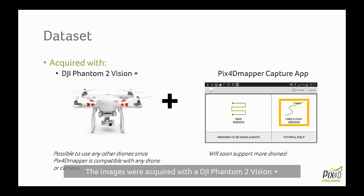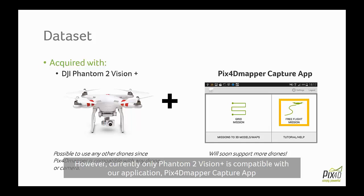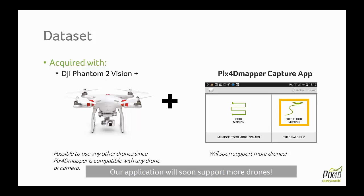Regarding the dataset, in this example the images were acquired with the DJI Phantom 2 Vision Plus. It's possible to use any other drone since Pix4D mapper is compatible with any drone or camera. The advantage of using this drone is that it's compatible with our mobile application Pix4D mapper capture app. Currently our application is only compatible with this drone but it will soon support more drones.